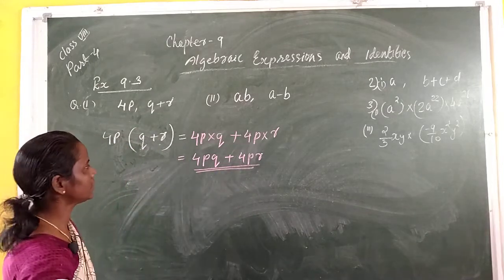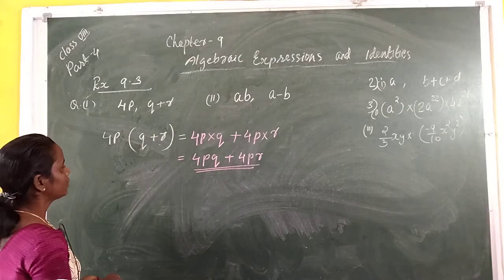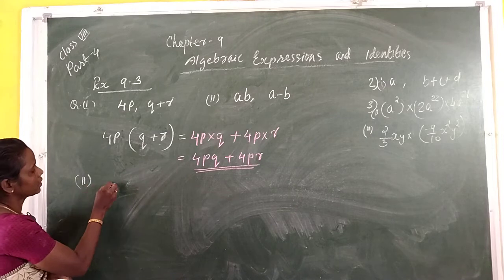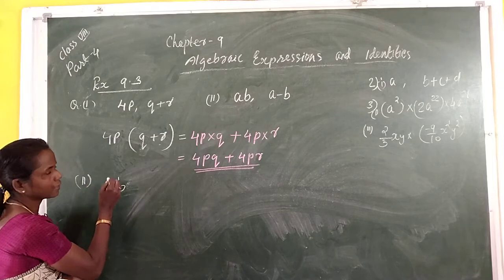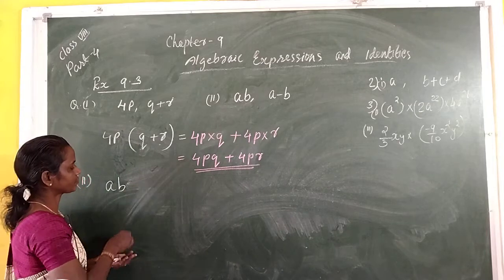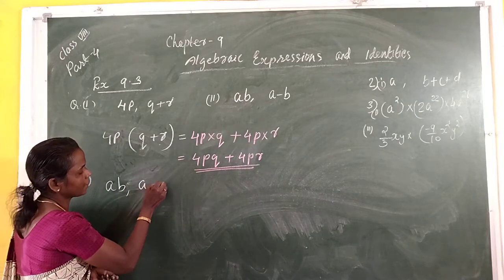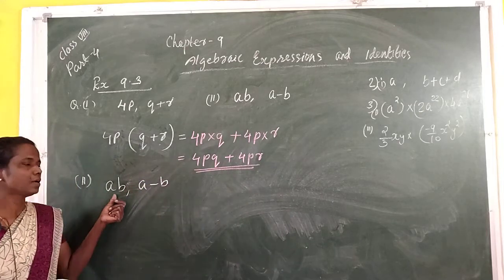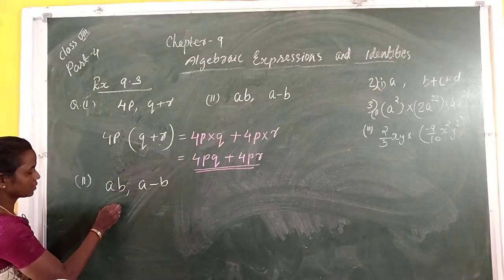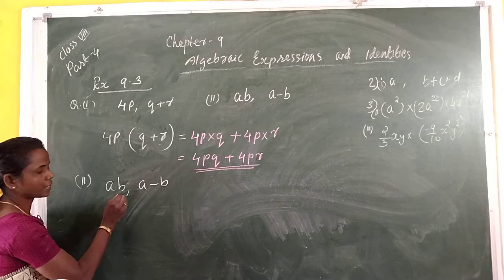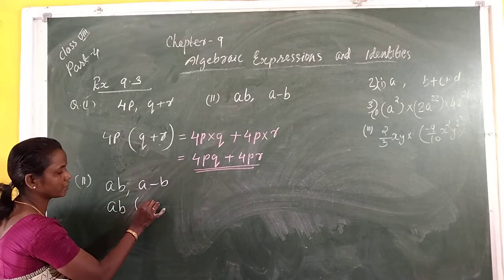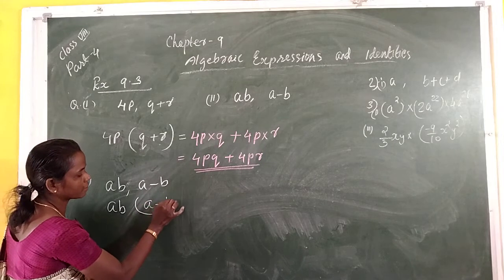Now the second question: AB multiplied by (A minus B). Here AB is the monomial and (A minus B) is the binomial. We write AB outside the bracket and the binomial inside the bracket.